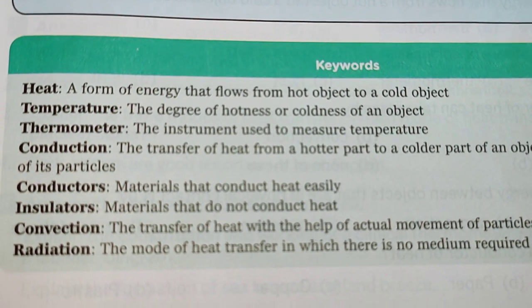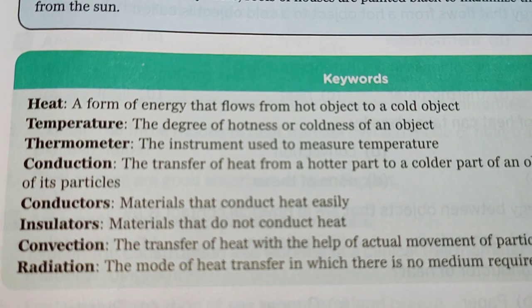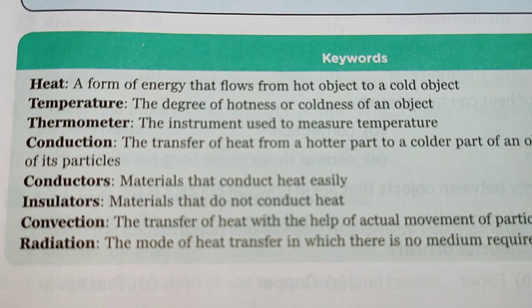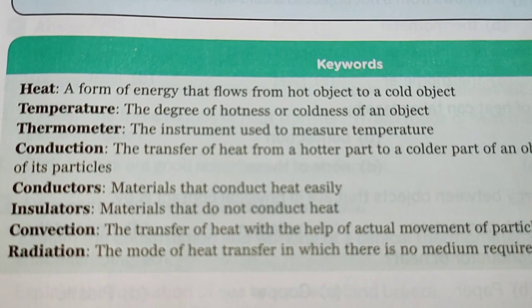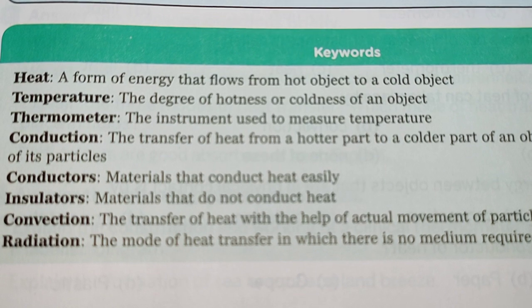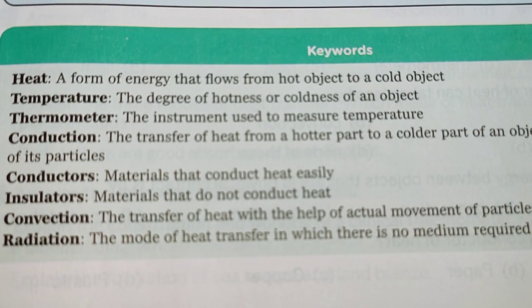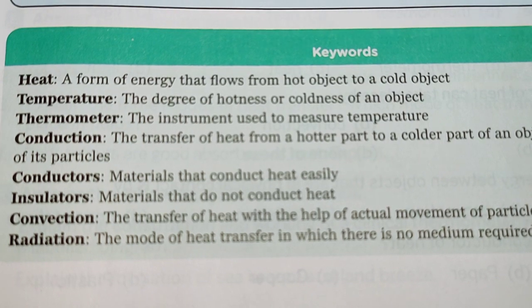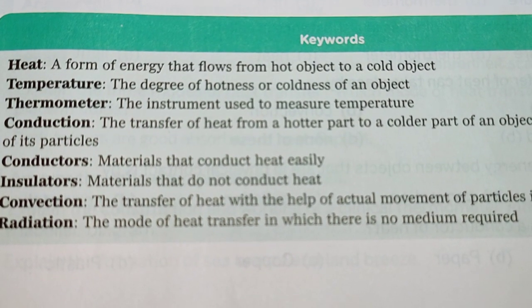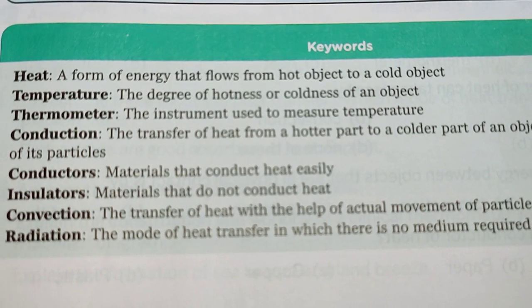At the end of this lesson, we have learned these key points: Heat is a form of energy that flows from a hot object to a cold object. Temperature is the degree of hotness or coldness of an object. A thermometer is an instrument used to measure temperature. Conduction is the transfer of heat from a hotter part to the colder part of an object. Conductors are materials that conduct heat easily; insulators do not. Convection is the mode of heat transfer with the help of actual movement of particles. Radiation is the mode of heat transfer in which no medium is required.